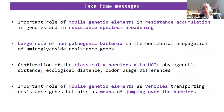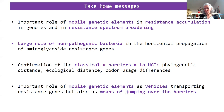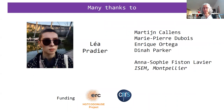To summarize: we have shown an important role of mobile genetic elements in resistance accumulation in genomes and in resistance spectrum broadening. We have identified a large role of non-pathogenic bacteria in the propagation of aminoglycoside resistance genes. The oriented horizontal gene transfer networks confirm the classical barriers to horizontal gene transfer, but we also showed an important role of mobile genetic elements not only as vehicles transporting the resistance genes, but also as means of jumping over the barriers to horizontal gene transfer. I would like to acknowledge that this is mainly the work of Lea Pradier, and also thank other members of my group and Anna-Sophie Pistor-Lavie, with whom we collaborated, and thank you for your attention.